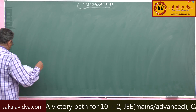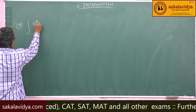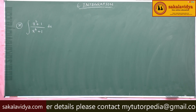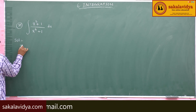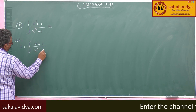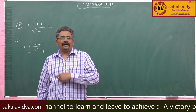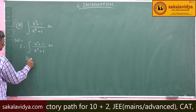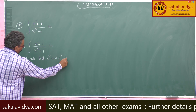32nd problem. Evaluate integral of x square plus 1 by x to the power 4 plus 1 dx. Now, i equals integral of x square plus 1 by x to the power 4 plus 1 dx. In this case, it is better to divide both numerator and denominator by x square.